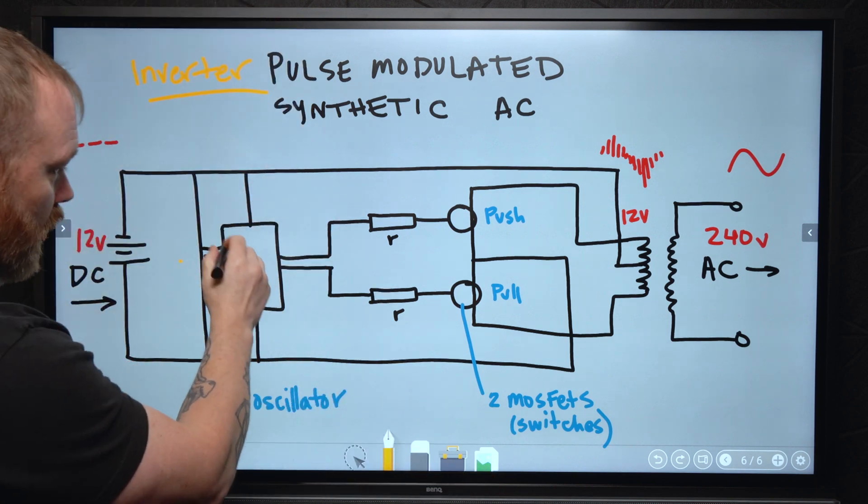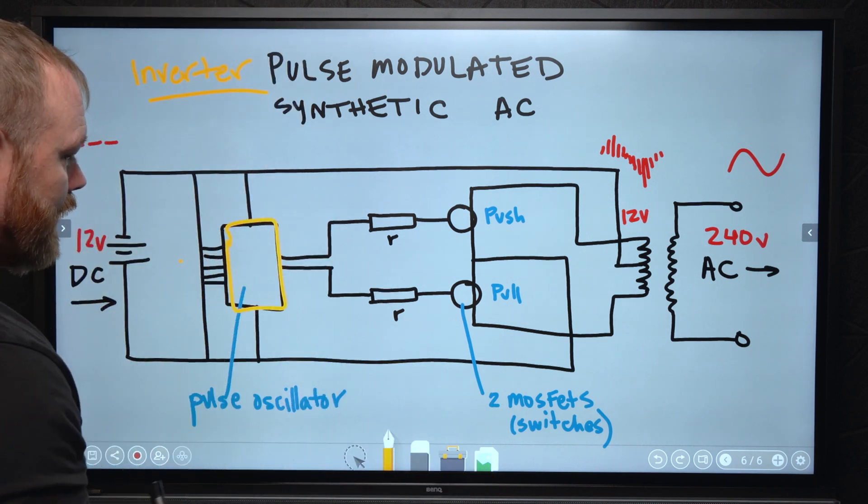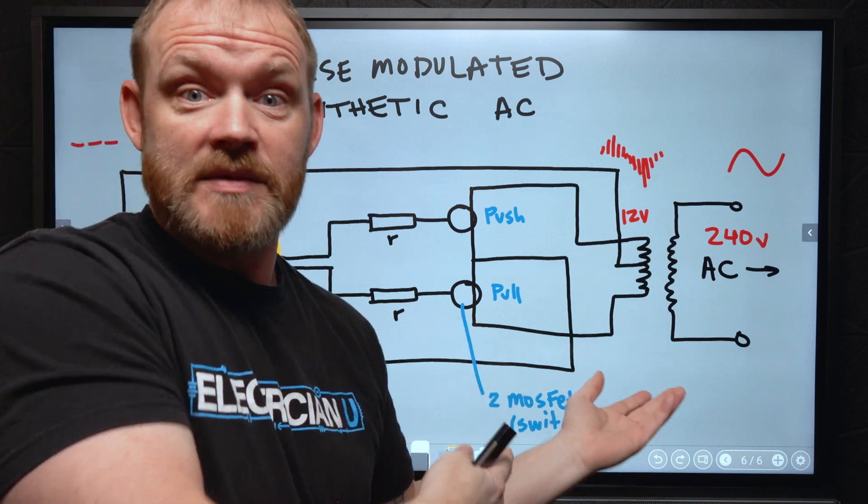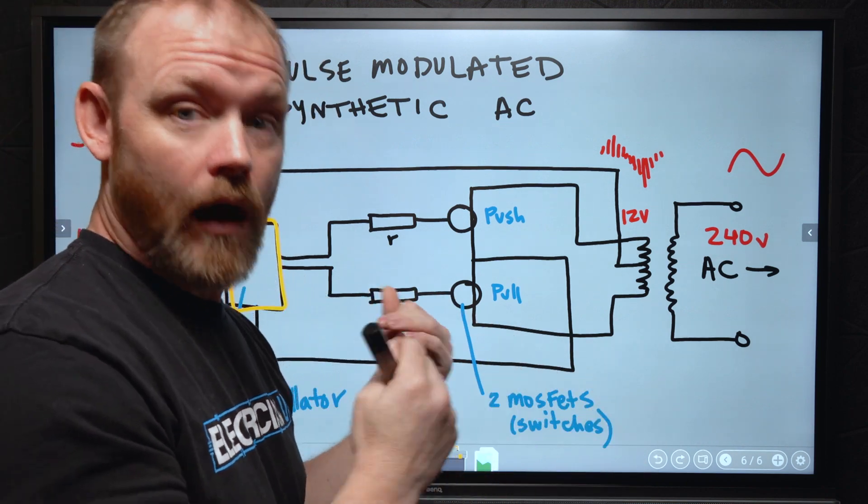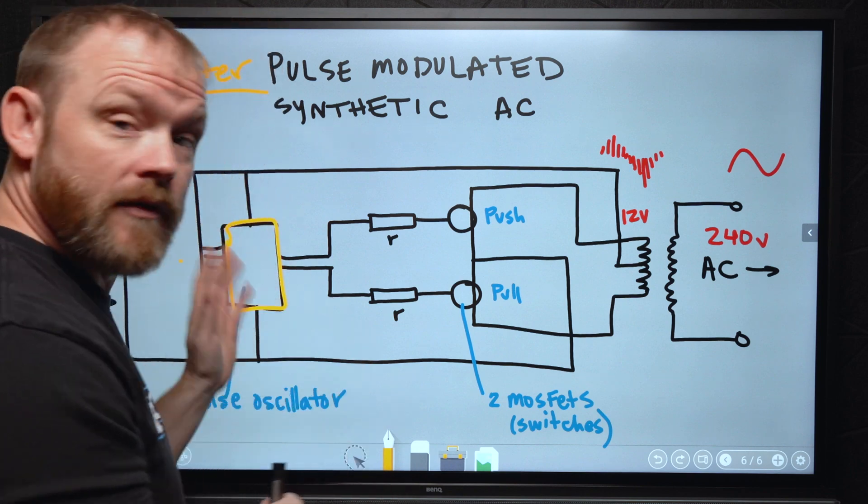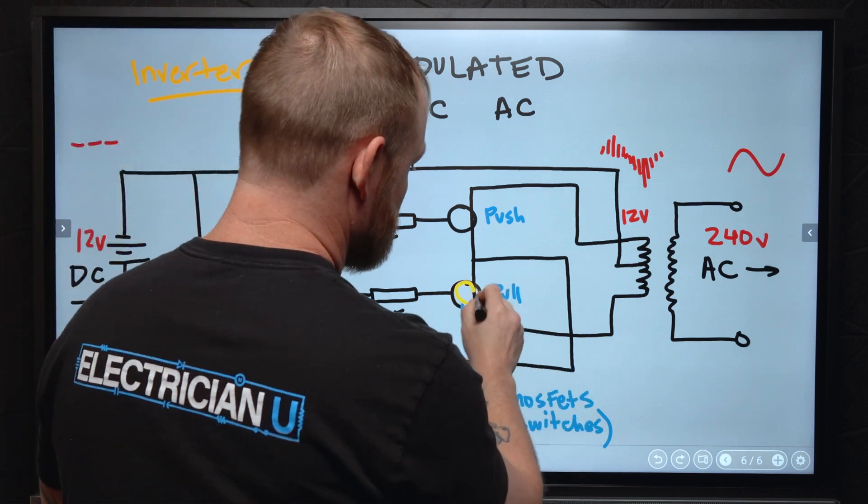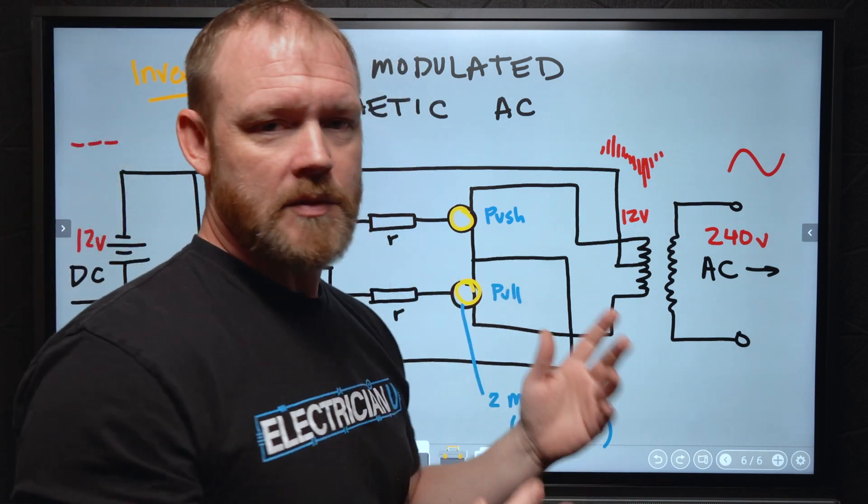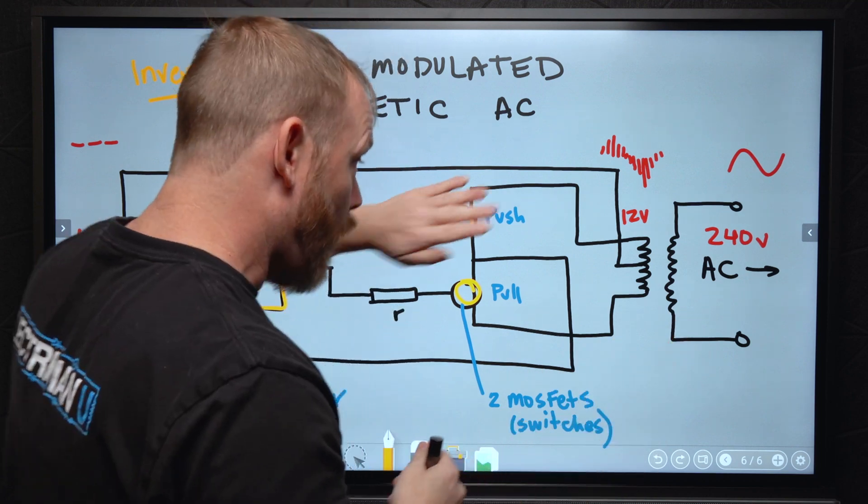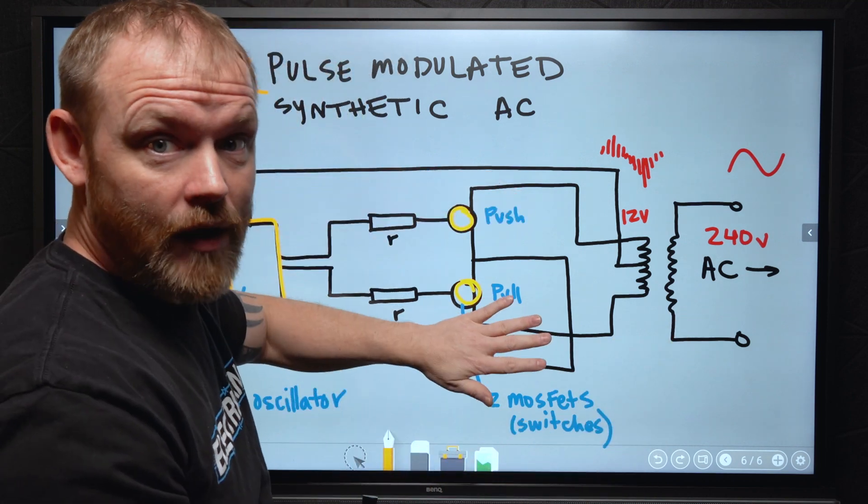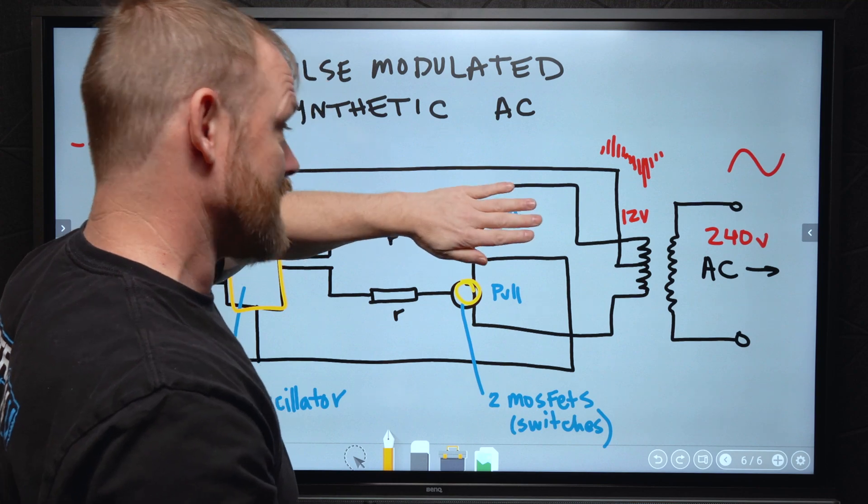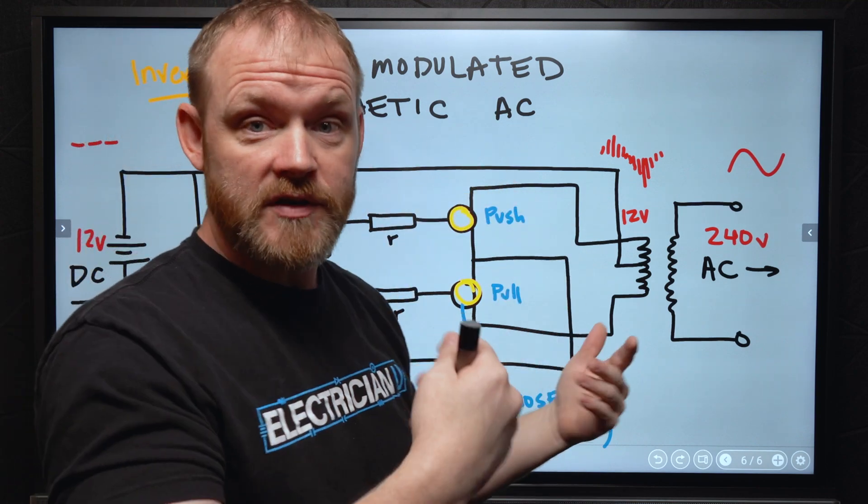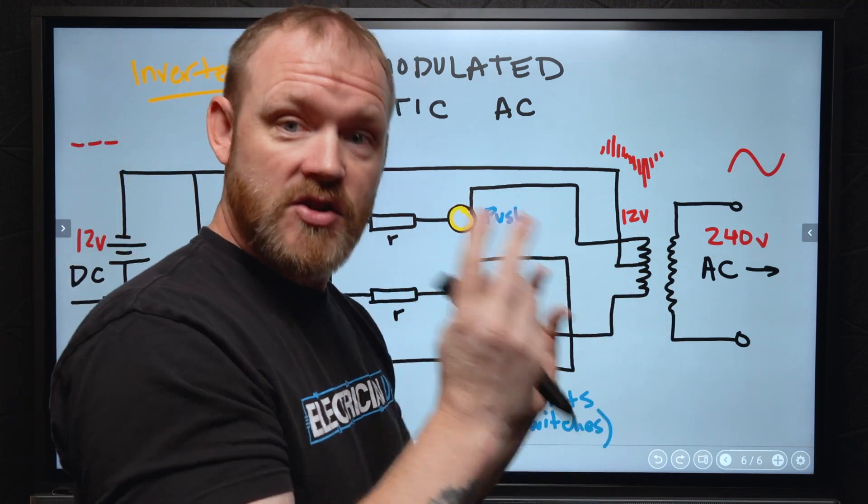So by doing this, we have something called a pulse oscillator. And this does what the name says. It oscillates in pulses very, very fast. And it also uses two MOSFETs, which you can think of them as just switches. When one of them is on, the other one is off. And when one switches off, the other one turns on. So they take turns switching.